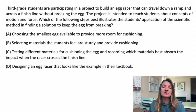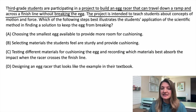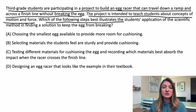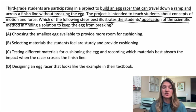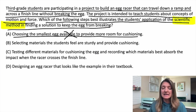Question two. Third grade students are participating in a project to build an egg racer that can travel down a ramp and across the finish line without breaking the egg. The project is intended to teach students about concepts of motion and force. Which of the following steps best illustrates a student's application of the scientific method in finding a solution to keep the egg from breaking? Option A: choosing the smallest egg available to provide more room for cushioning — that's not really part of the scientific method.